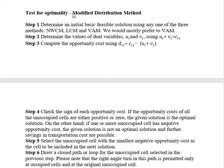Test for Optimality: Modified Distribution Method or MODI Method. Step 1: Determine an initial basic feasible solution using any one of the three methods — Northwest Corner Method, Least Cost Method, and Vogel's Approximation Method. We would mostly prefer Vogel's Approximation Method. Step 2: Determine the values of dual variables u_i and v_j using u_i + v_j = c_ij.